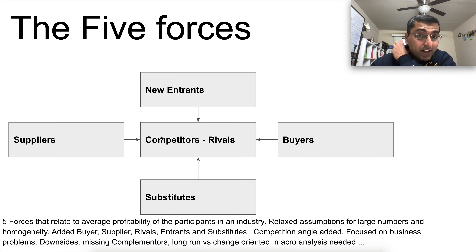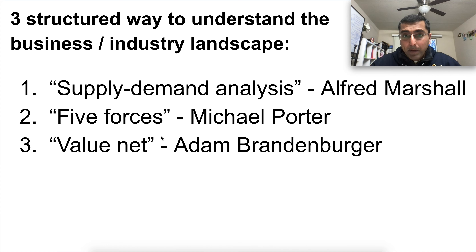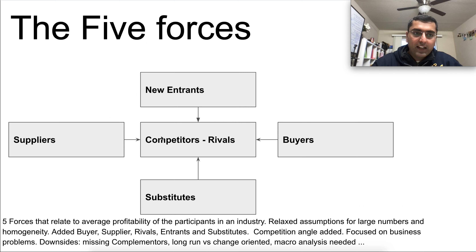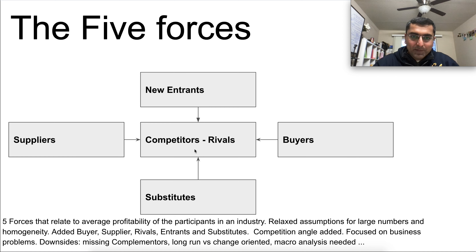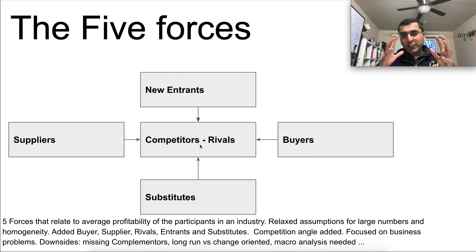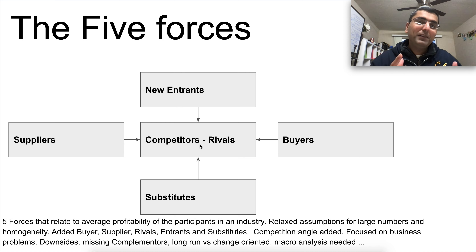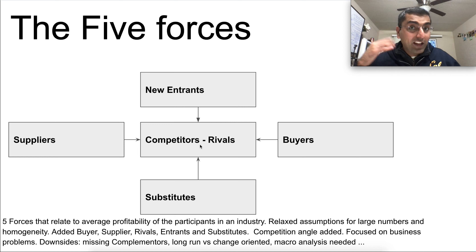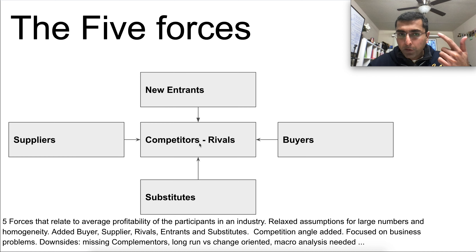The second evolution was the Five Forces by Michael Porter. Supply-demand analysis came from Alfred Marshall; Five Forces came from Michael Porter. Suppliers and buyers are still present, but Porter added three new things in between. He added competitors or rivals — the idea that for a given industry, you're not working in a silo. You have a set of competitors that constantly shape your profitability. If your competitor drops price, you have to adapt and react. So rivals and competitors were another major lens added to structured profitability thinking.